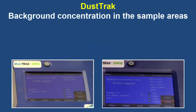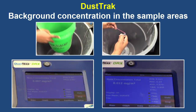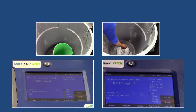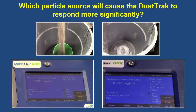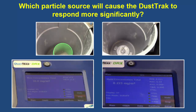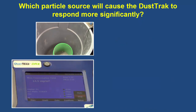Let's begin this activity by observing the DustTrak's response to the general background mass concentration of two sample areas. Now we'll introduce coarse or larger particles by pouring cat litter into a container and fine or smaller particles by lighting an incense stick with a lighter. How does the DustTrak respond to the two different particles generated? The DustTrak shows a significant increase in mass concentration with the cat litter compared to that of the incense stick.